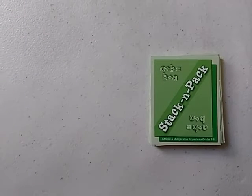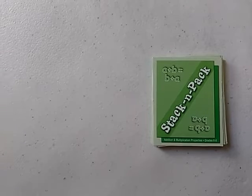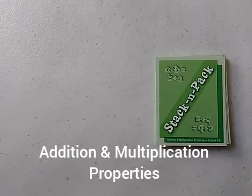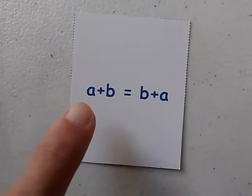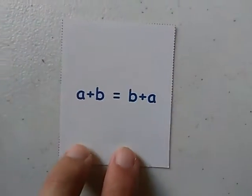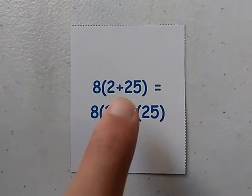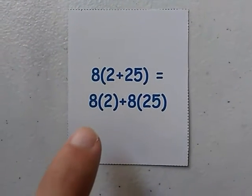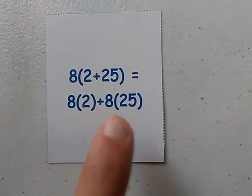Welcome back everyone to another game of Stack and Pack. Today I'm going to play game 3 called Addition and Multiplication Properties. This card says a plus b equals b plus a. This card says 2 plus 25 times 8 equals 8 times 2 plus 8 times 25.